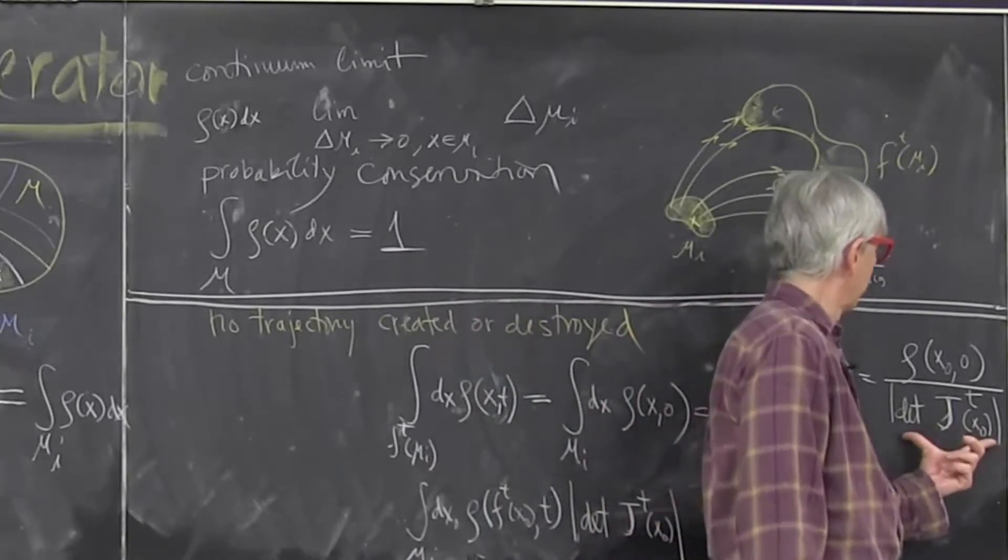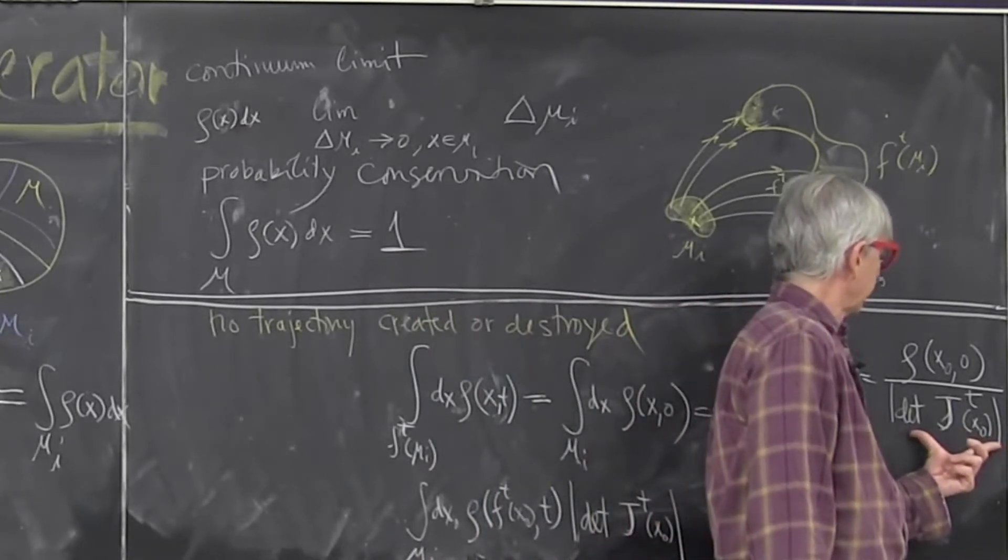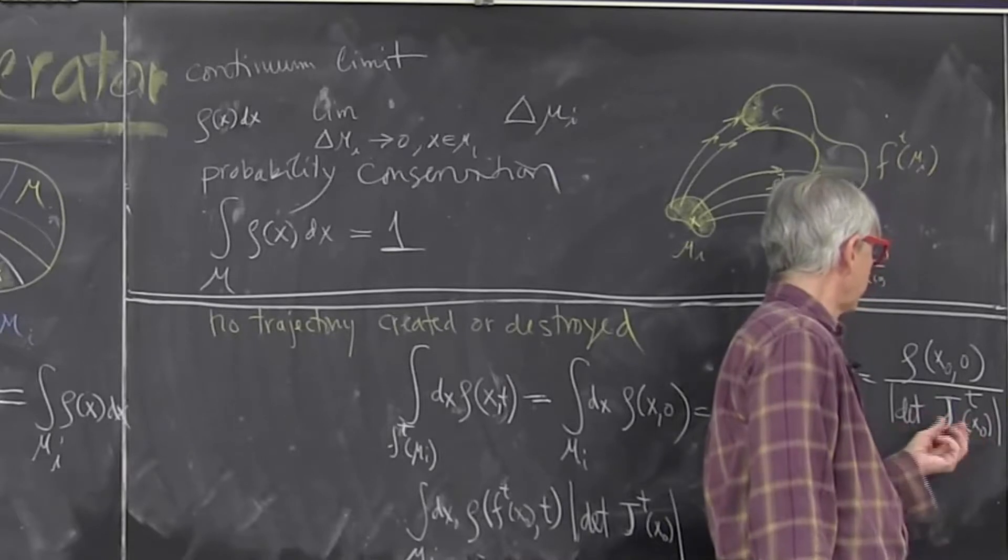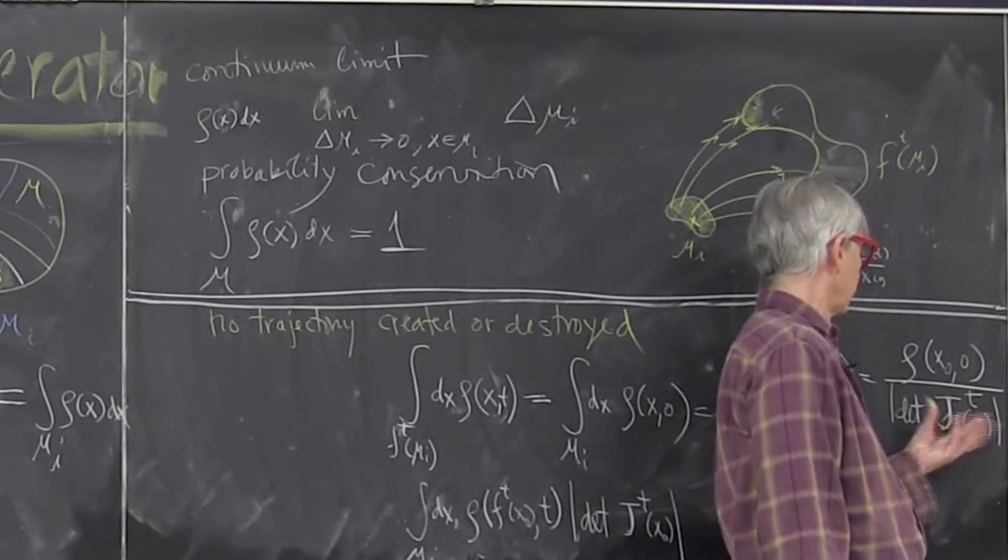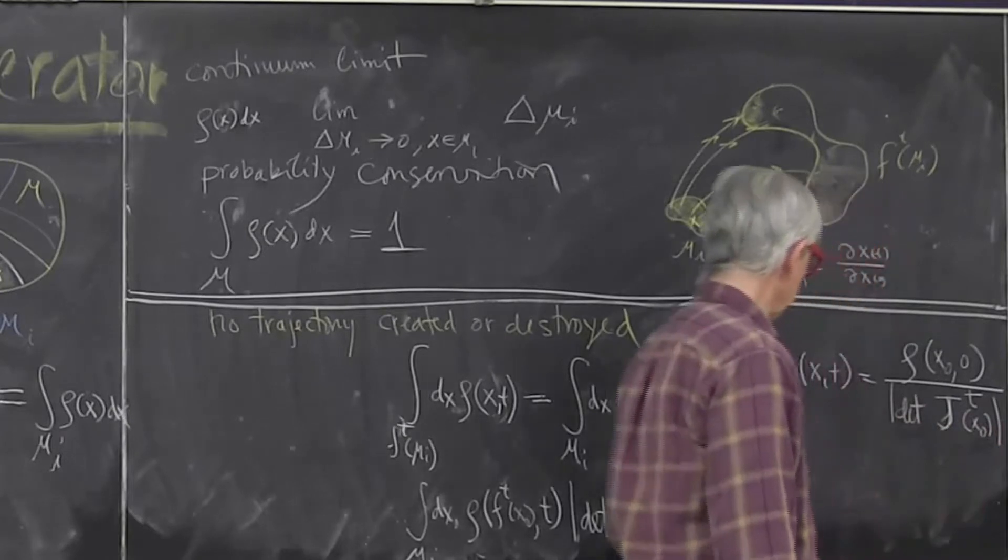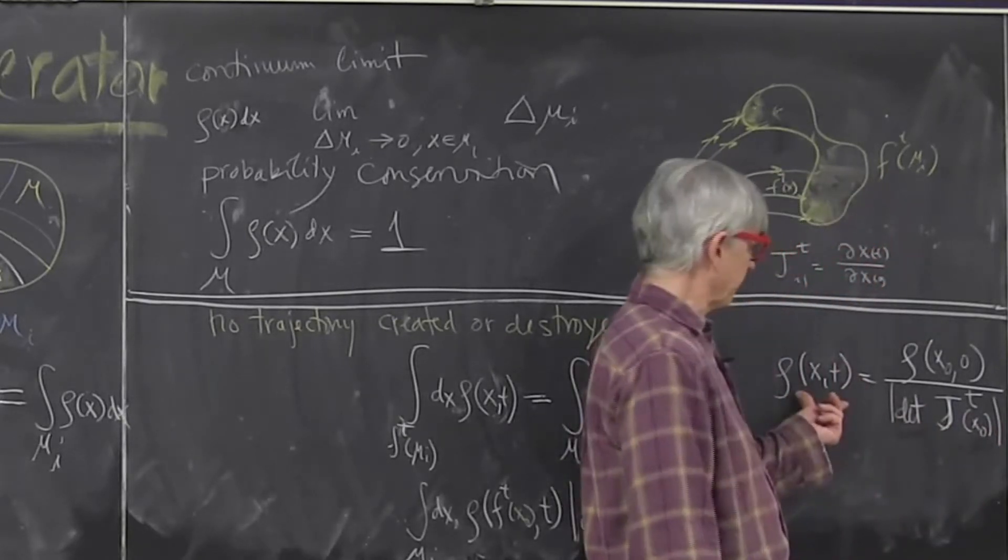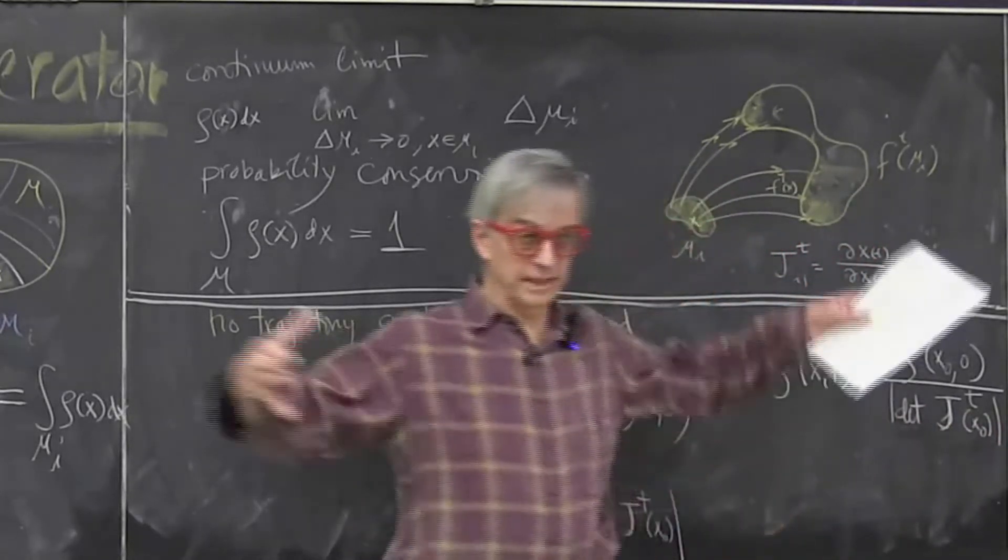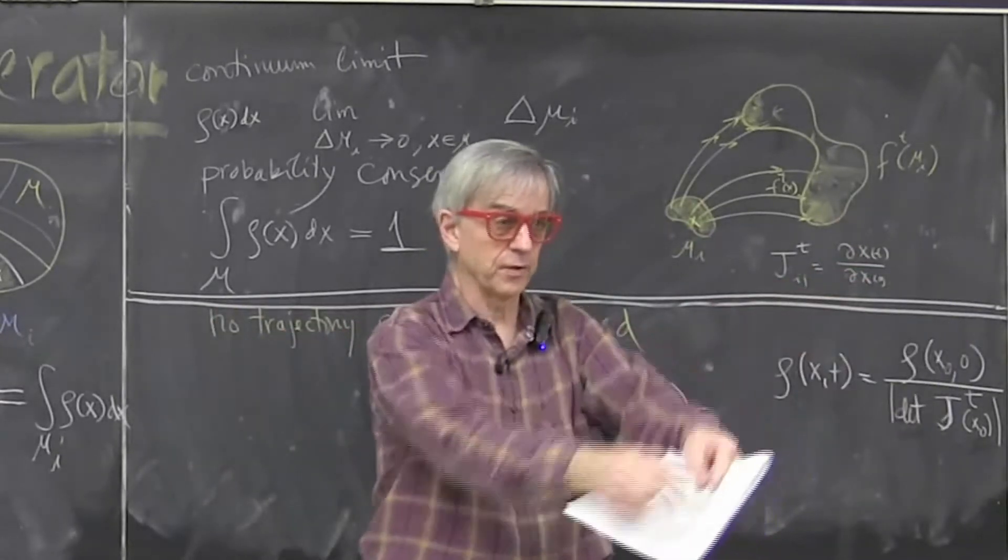If Jacobian is such that the flow is unstable, this is factor larger than one, this determinant, it means that the density will increase because we'll take the whole thing and we'll squash it to a smaller volume.